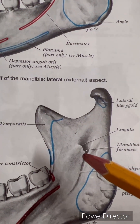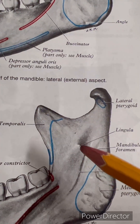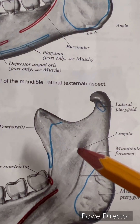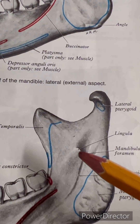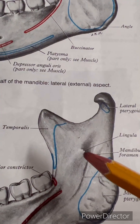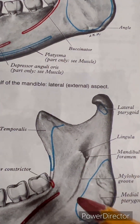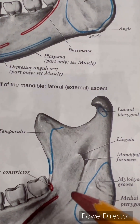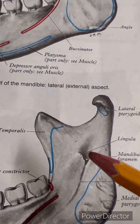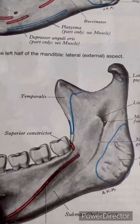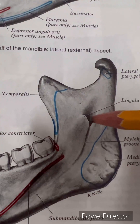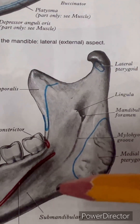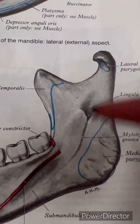Lingula gives attachment to the sphenomandibular ligament. The lingula is an elongated triangular bony projection just overlying the mandibular foramen. The mylohyoid vessels and nerves pass through the mylohyoid groove. The inferior alveolar nerve and vessels enter through the mandibular foramen, pass downwards and anteriorly, emerging through the mental foramen as mental nerves and vessels.